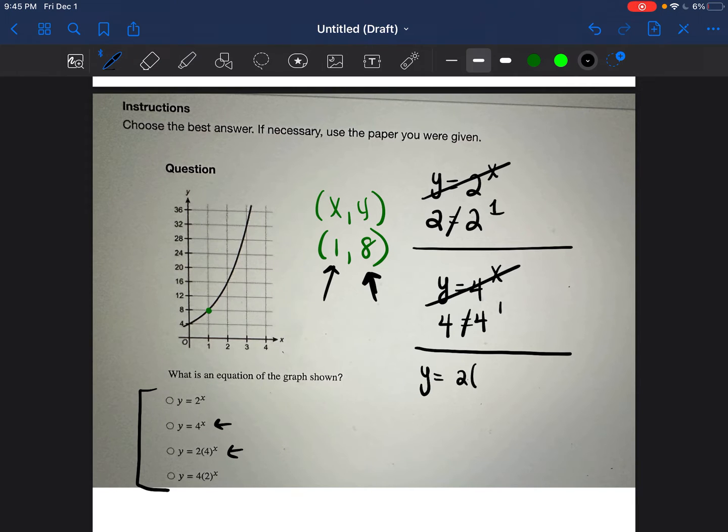Now we're going to test this third one. y is equal to 2 times 4 to the exponent of x. Okay? So again, we're going to put in 1 for x and we're going to go ahead and solve this. How do we solve this?